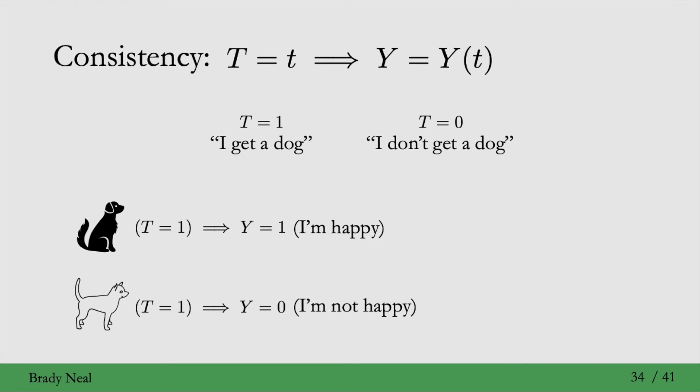But if I were to get a different dog, a chihuahua say, I would observe Y equals 0. I would be unhappy. And this is the same value of treatment. It's still T equals 1.